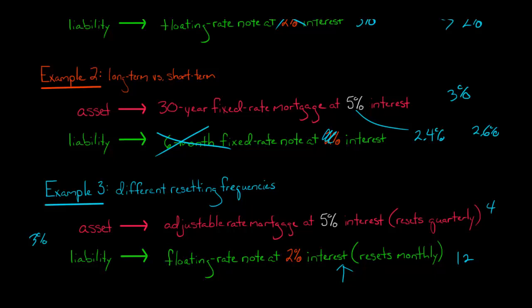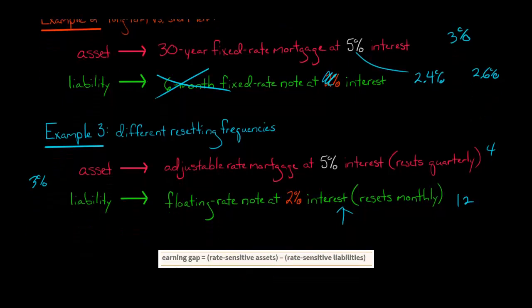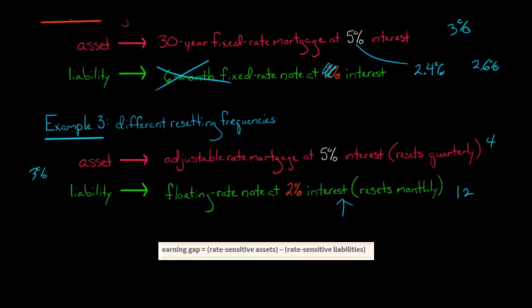So this is the earning gap — the bank wants to try to minimize it. We can measure the sensitivity of the bank's net interest income to the interest gap. When we do that, we measure the earning gap as the difference between the bank's rate-sensitive assets and its rate-sensitive liabilities.